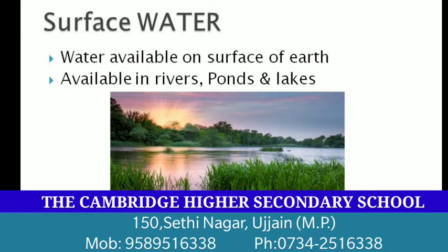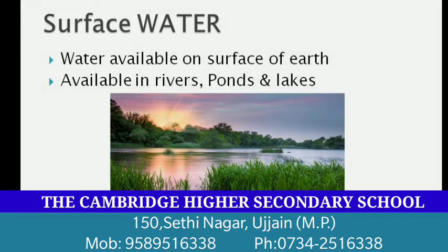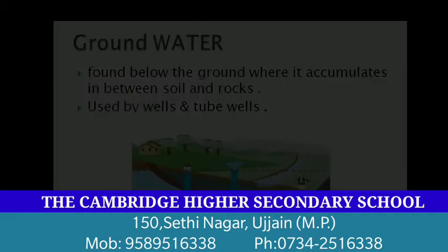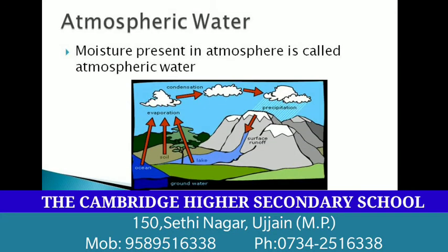First is surface water — the water which is available on the surface of the earth, mainly in rivers, ponds and lakes. Next is groundwater, yani paani joh hume zameen ke neeche se milta hai. Barsaat ke samay, jo paani surface ke neeche dharti mein chala jaata hai, wo ground water kehlata hai. It is later used by humans through wells and tube wells.